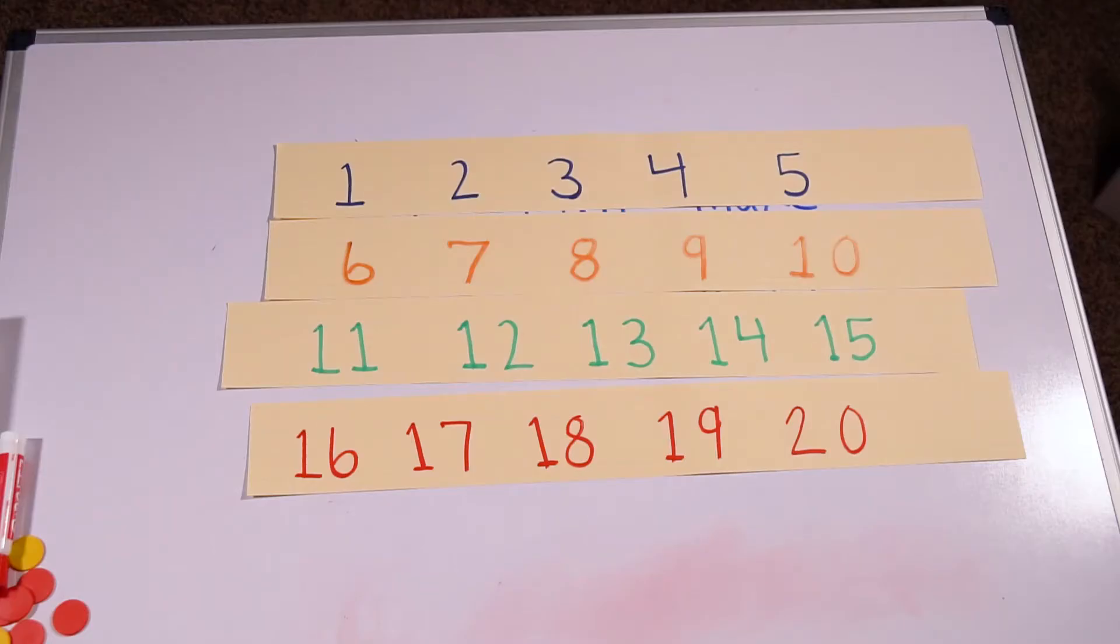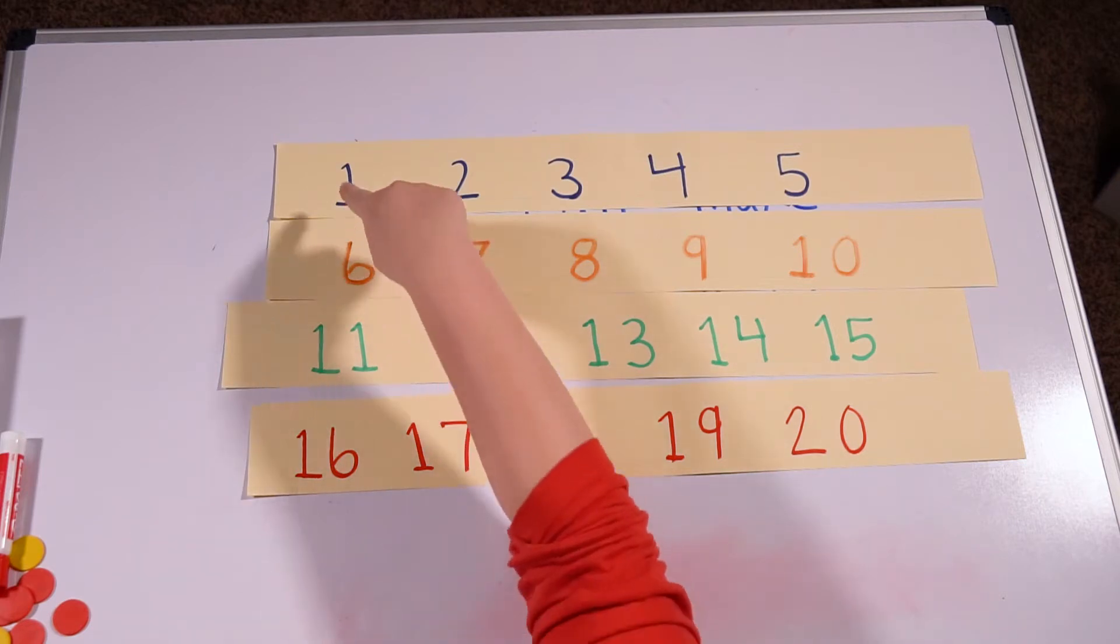All right, so just like we've been doing all week, let's start off by practicing counting to 20. I want you to make sure that you're following along so that you can start to put a name with a number. Follow along and count with me.